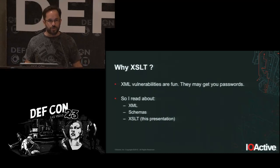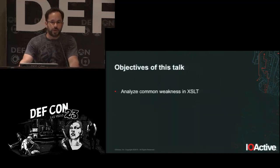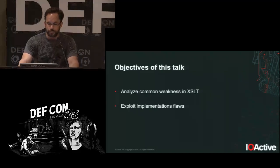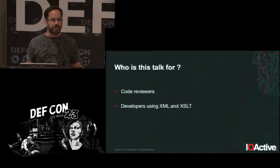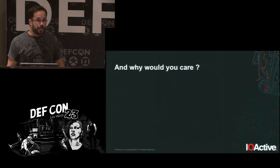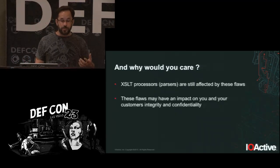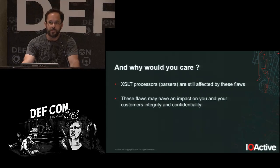When you're reviewing a language, you may want to know that. So what we will be doing here is analyzing what those weaknesses are. We're presenting five different issues and how you can practically exploit them. Whether you're reviewing code, a penetration tester, or developing technologies related to XSLT, this will come in handy. Even today, none of the vulnerabilities have been fixed, so everything will work. You may be able to affect the confidentiality and integrity of multiple implementations.